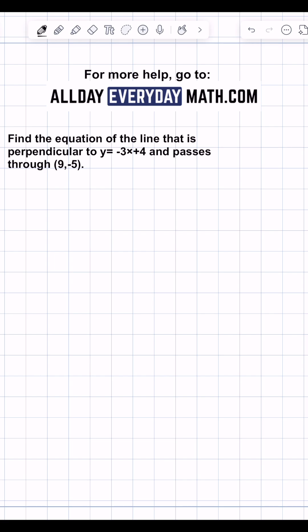So the first thing we've got to know is that in order to be perpendicular, we need a slope that is the negative or opposite reciprocal.